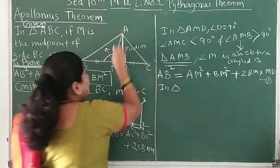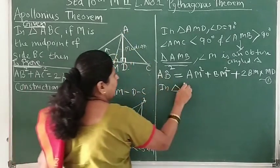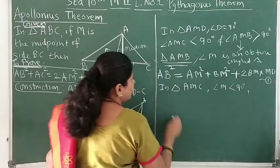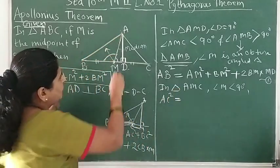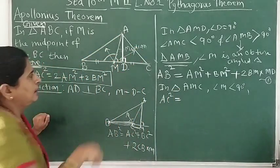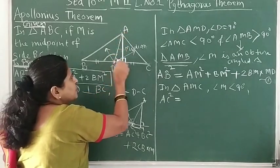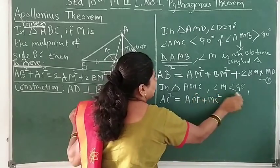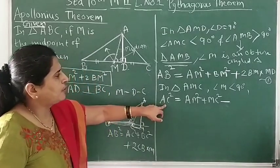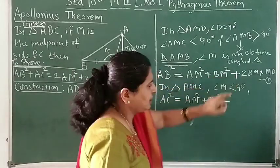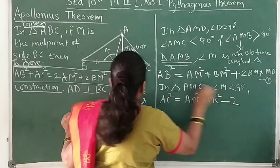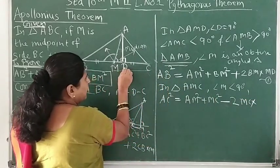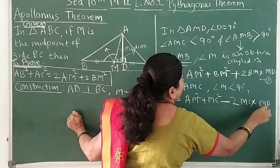Now, in triangle AMC, angle AMC is an acute angle. So AC square is the side opposite to the acute angle. AC square is equal to AM square plus MC square minus 2 times MC into MD. This is equation number 2.